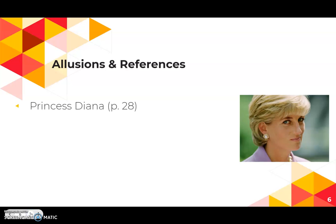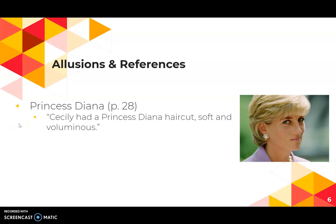Some other non-art-related allusions include a lot of references to Princess Diana — talking about how Cecily had a Princess Diana haircut, soft and voluminous. With everything coming out right now on TV and in movies you probably have an idea of what that looks like. This is especially helpful when we have different timelines throughout the book, as references like this help root a scene in a specific timeline, particularly when we're talking about the late 1980s.